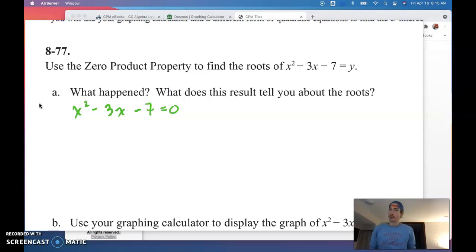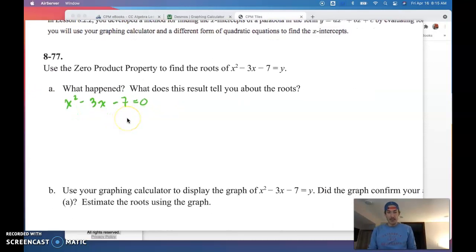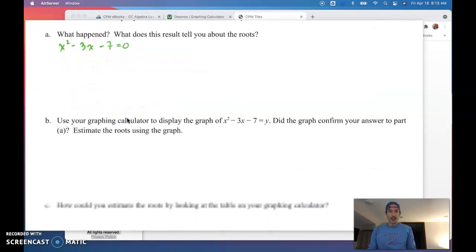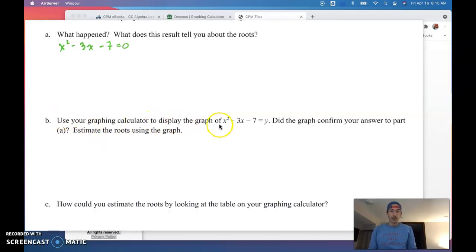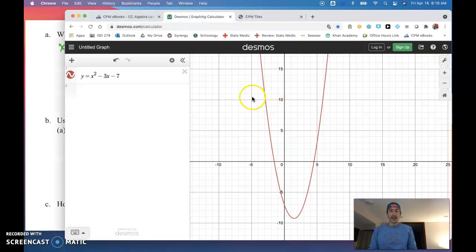And it potentially means that my roots are not going to be these nice positive or negative whole number values or these nice integer values. And we're going to see that here as I went ahead in part B and did some graphing. It says, use your graphing calculator to display the graph of y equals x squared minus 3x minus 7. And it says, does this confirm? Well, ladies and gents, I did this on Desmos.com. I went ahead, I entered this function in, y equals x squared minus 3x minus 7.